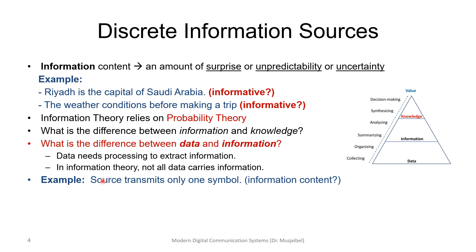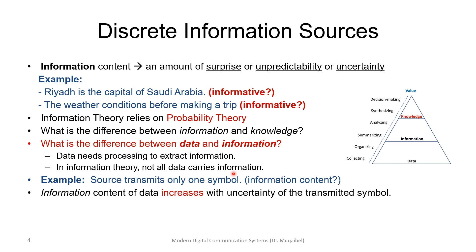For example, if we have a source that always generates one symbol, the information content is zero. If you have a friend that always says 'no,' you already know the answer, so there is not much added by getting that response. Information content of data increases with the uncertainty of the transmitted symbol. If you have one symbol there is no uncertainty; the more unexpected the symbol, the more information we get.